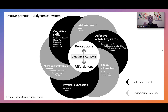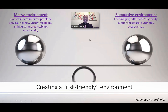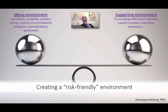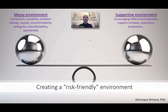Before getting to that question: since the environment matters so much for creativity to emerge, we first need to set a specific type of environment — I like to call it a risk-friendly environment. When you set an environment to implement those movement activities, you need to think of two major factors: creating a messy environment, and a supportive one. Does your environment involve various constraints, variability, problem-solving, novelty, uncontrollability, ambiguity, unpredictability, and spontaneity?